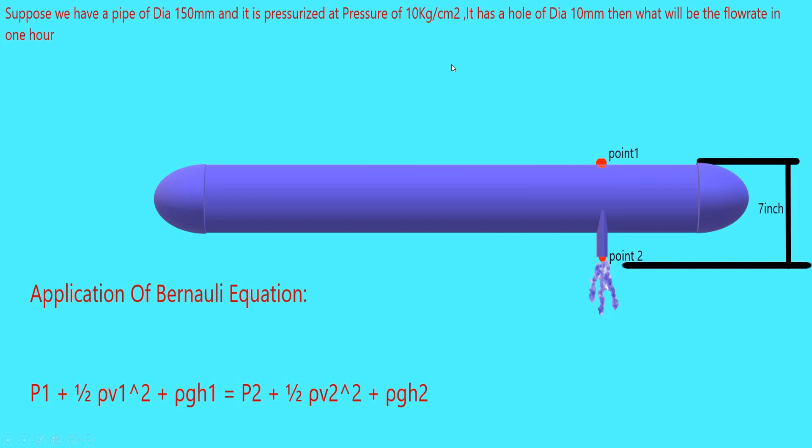This problem can be solved by Bernoulli's equation. Suppose that point two is the point which is the hole in this pipe and which discharges the water. Point one will be on the top surface of the water.